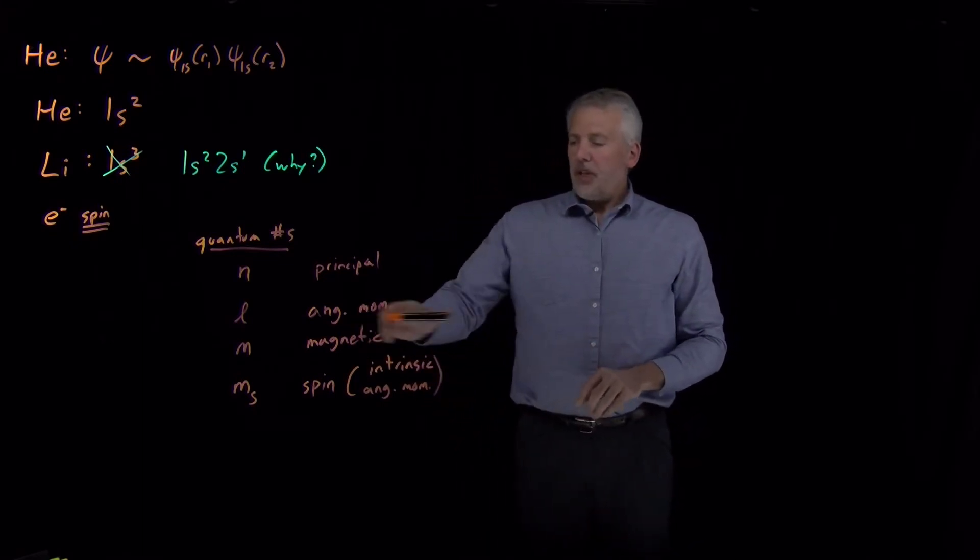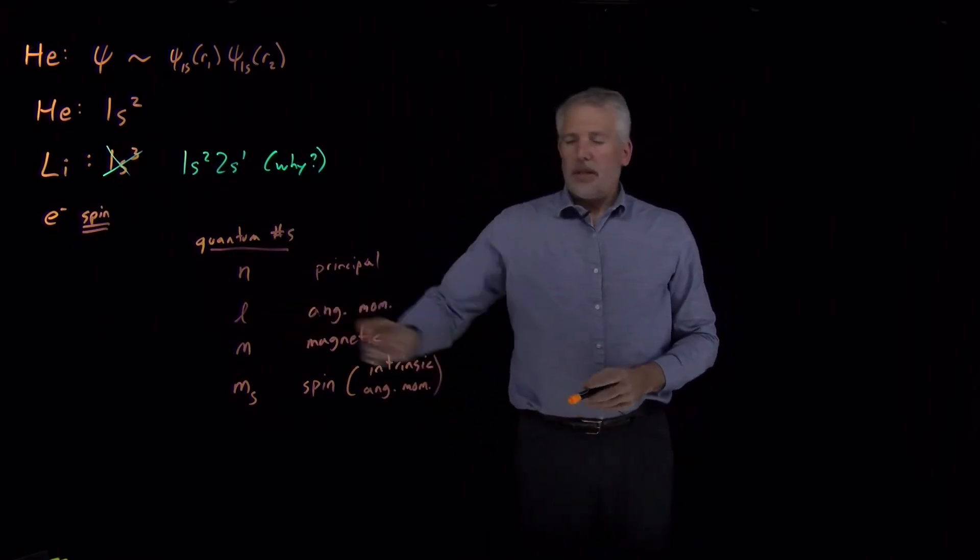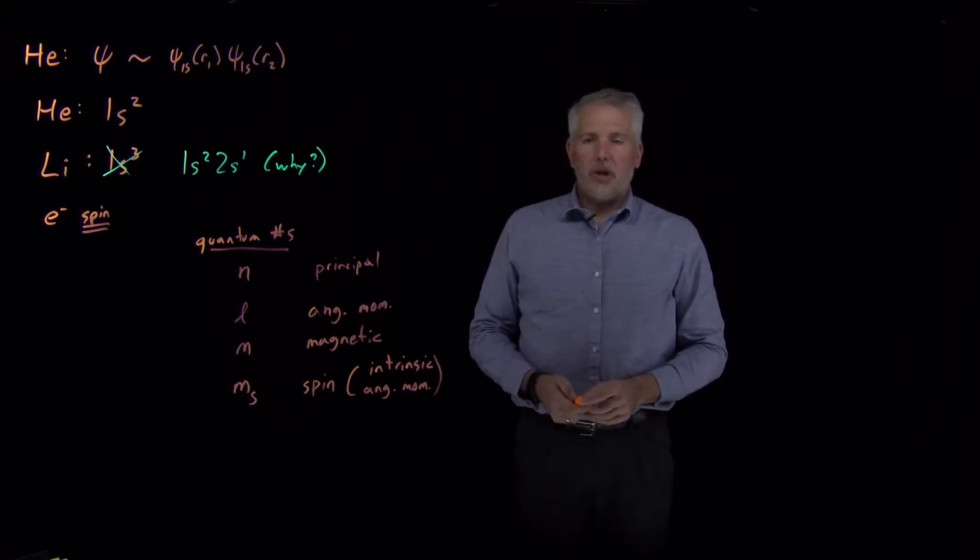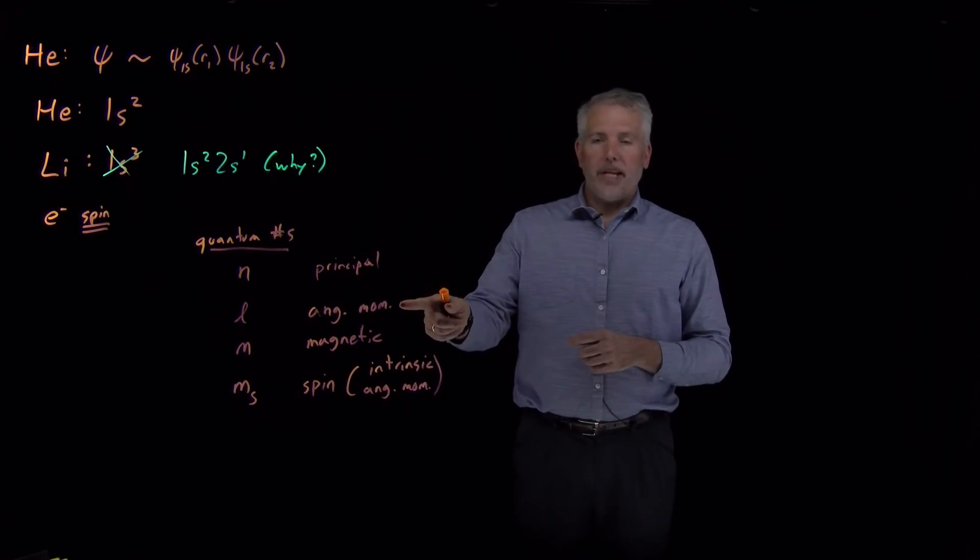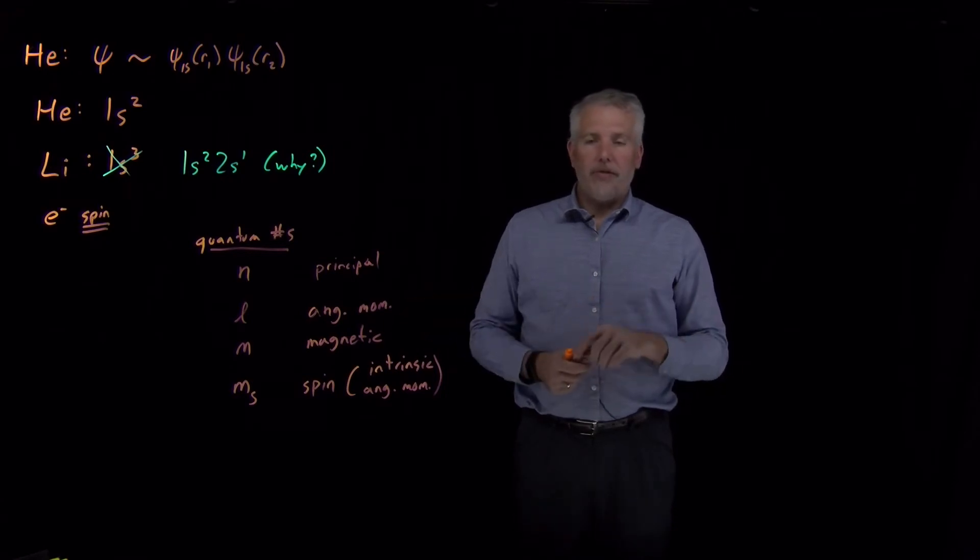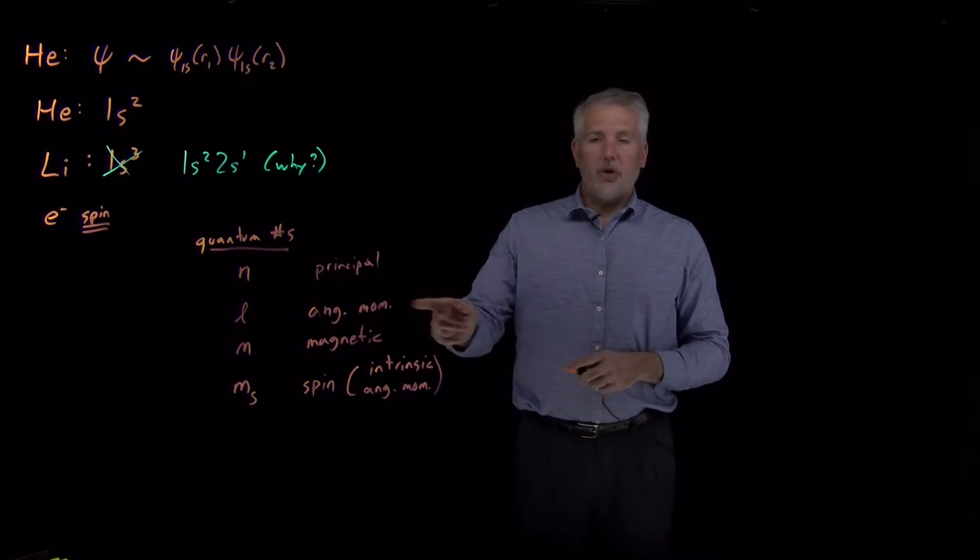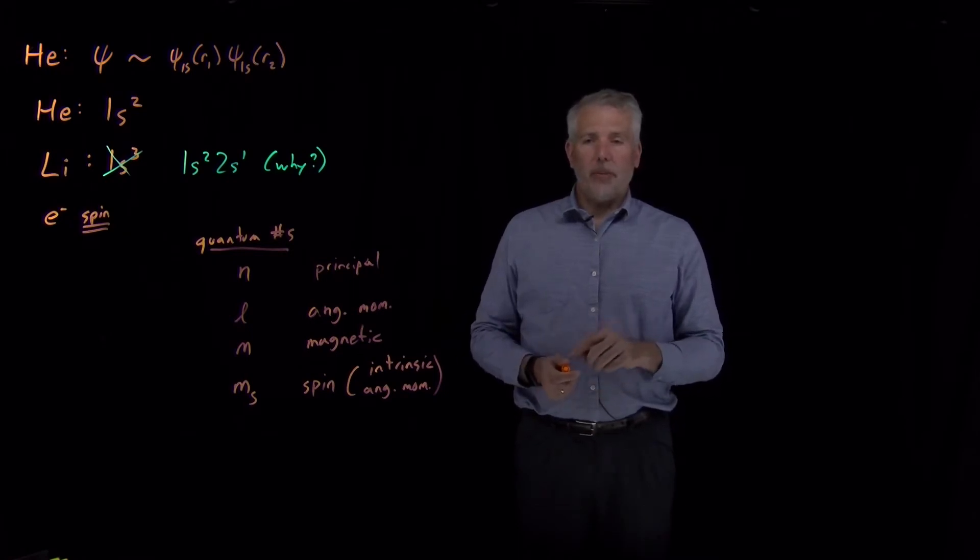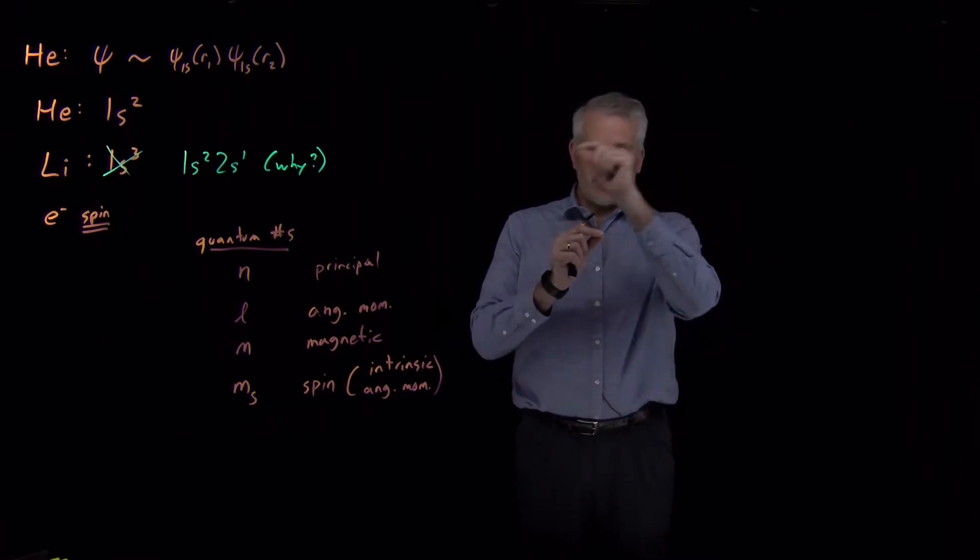When we talk about angular momentum, remember the thing that differentiates an electron in an l=0 or l=1 or l=2 orbital is whether it's in a spherical orbital, a dumbbell-shaped orbital, or a cloverleaf d orbital. Those differ in the angular momentum of the electron itself as it regards the nucleus. As the electron has kinetic energy around the nucleus, it has differing amounts of angular momentum. The more that wave function oscillates in space, the higher the angular momentum it has.